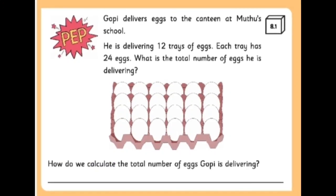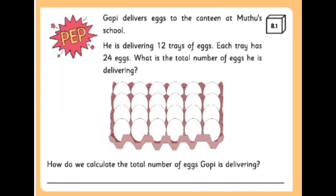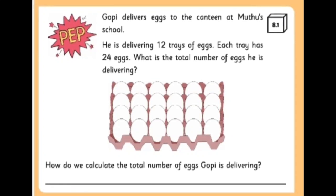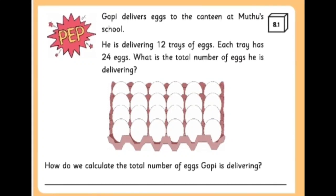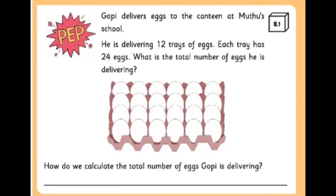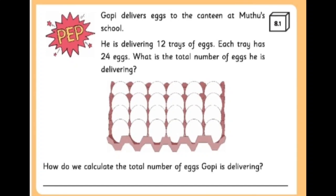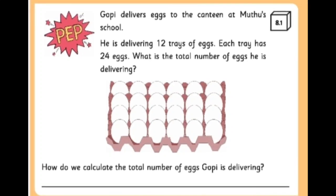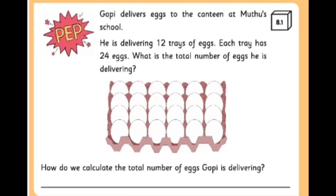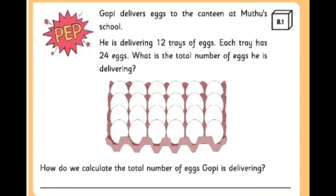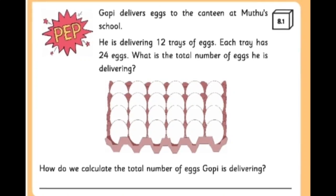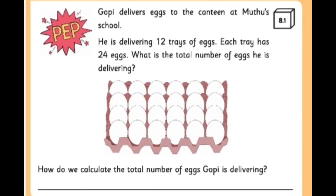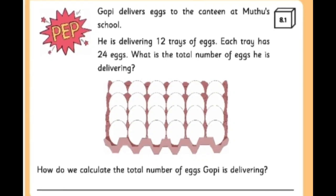Let's begin this chapter by working on the PEP activity. Please take page number 1 of your Math Studio Volume 2, PEP Activity 8.1. Let me read the question: Gobi delivers eggs to the canteen at Muthu's school. He is delivering 12 trays of eggs. Each tray has 24 eggs. What is the total number of eggs he is delivering? In this picture, you can see a tray of 24 eggs.